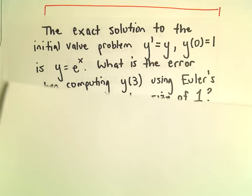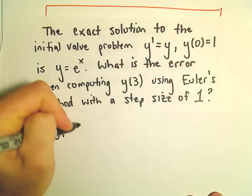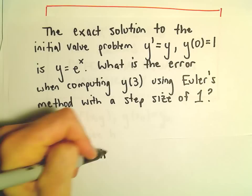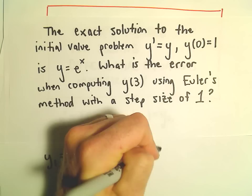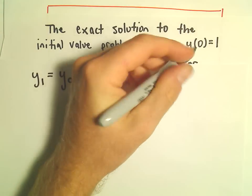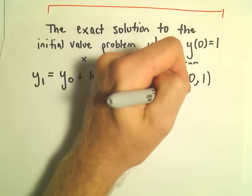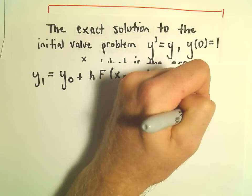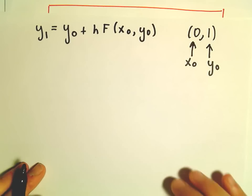So let's see. Our y₁ value is going to be y₀ plus the step size h times f(x₀, y₀). So again, we've got that y(0) = 1. So 0 is going to be our x₀ value, 1 is going to be our y₀ value.